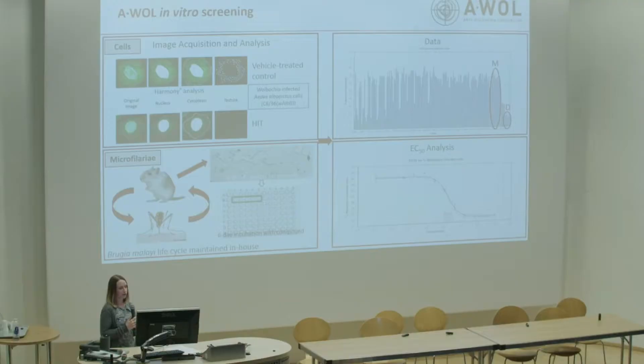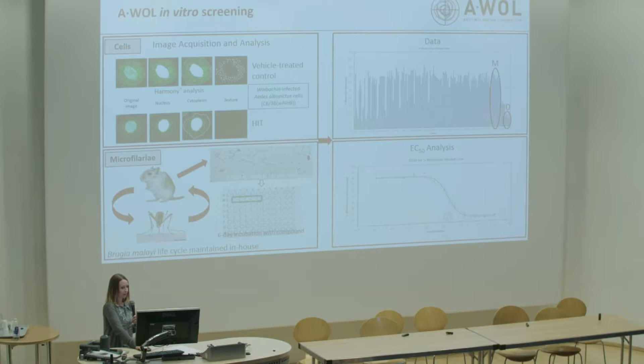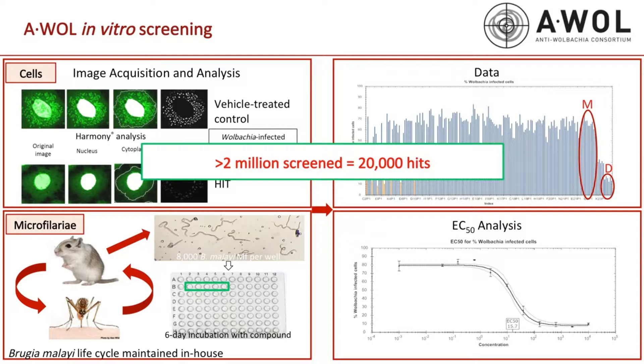We also reintroduced the microfilaria assay, which is lower throughput — around 20 compounds per week — but allows EC50 analysis to determine how effective hits are against Wolbachia in microfilariae, confirming activity seen in the cell screen. Overall, we've screened over 2 million compounds against the cells and have over 20,000 hits.